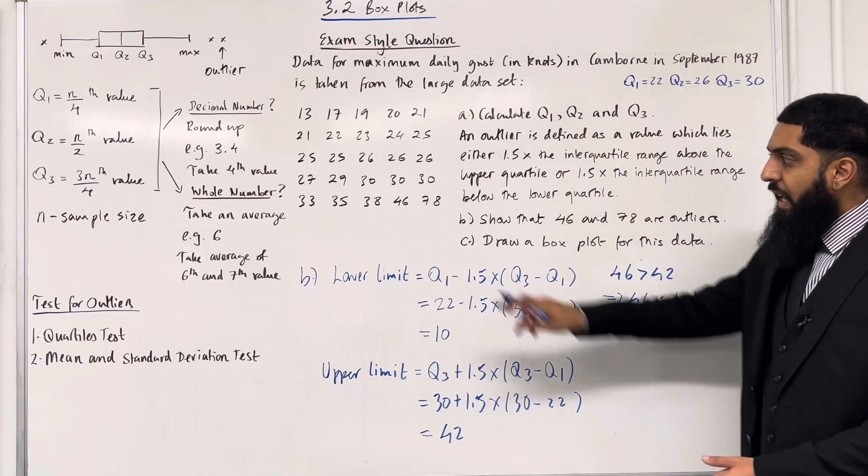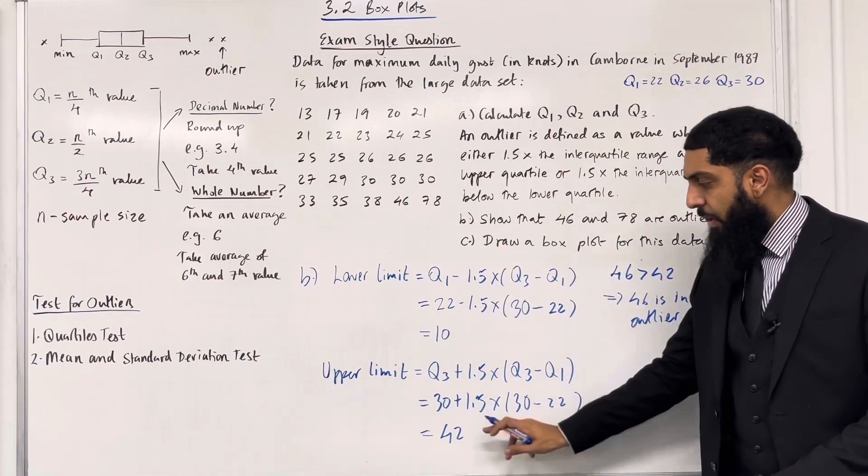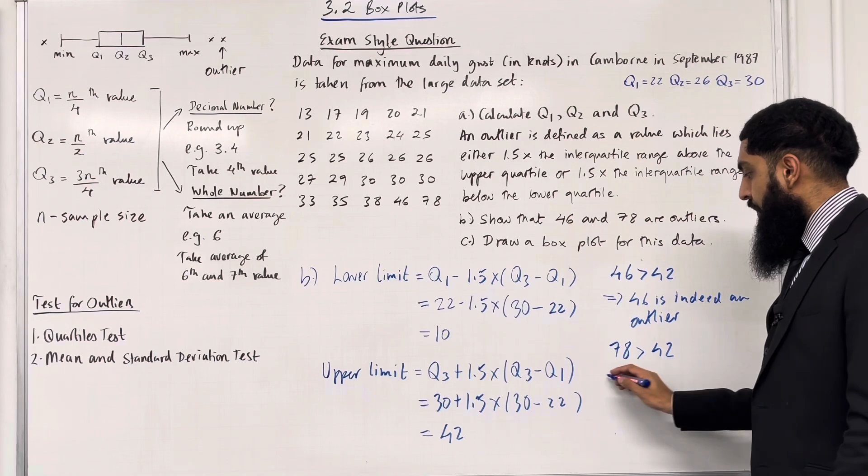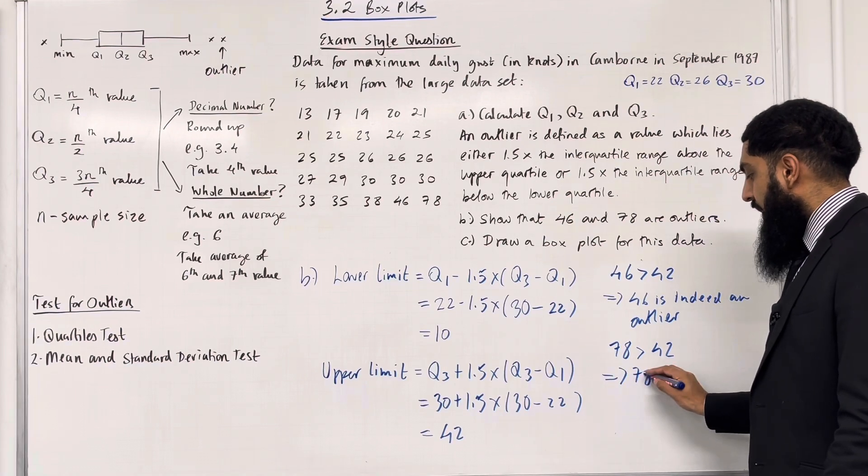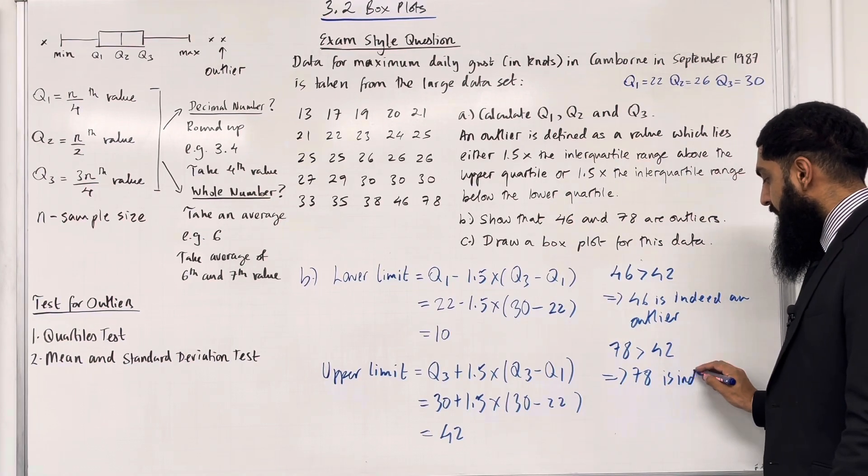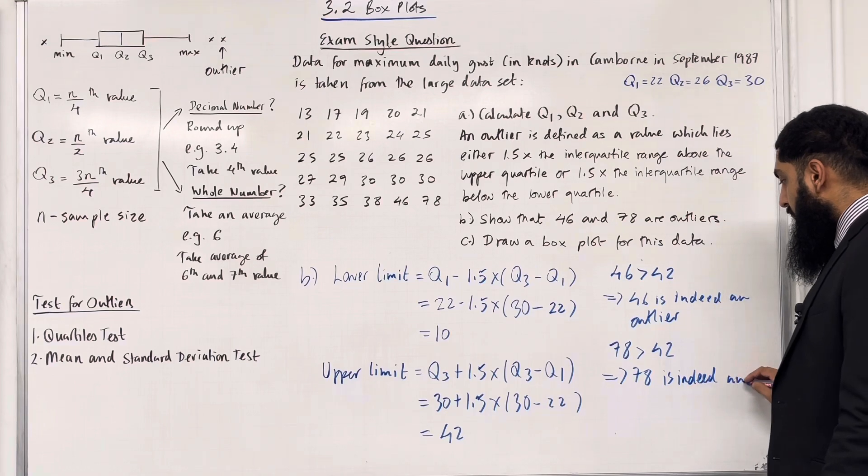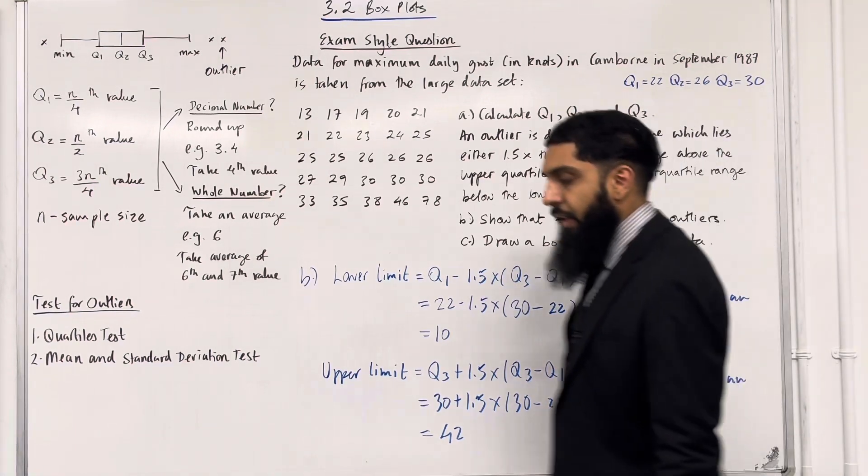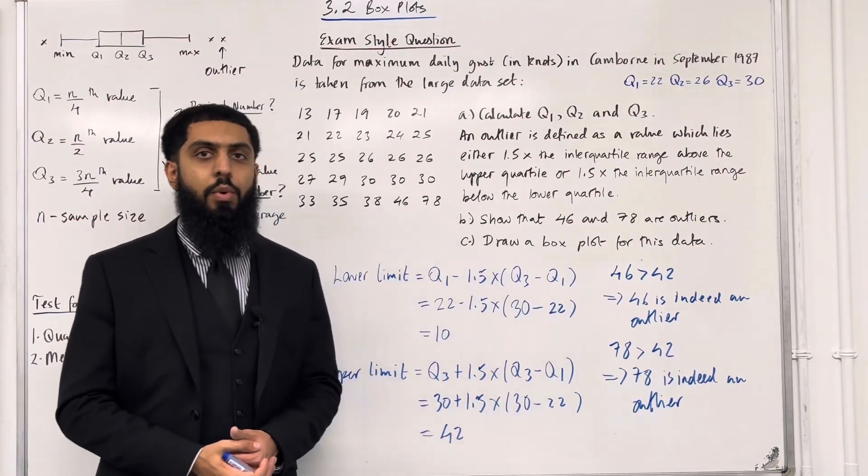Second, 78 is above the upper limit. We've got 78 is more than 42, which implies that 78 is indeed an outlier. That completes part B of this exam style question.